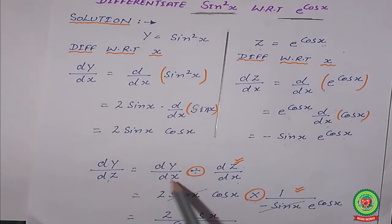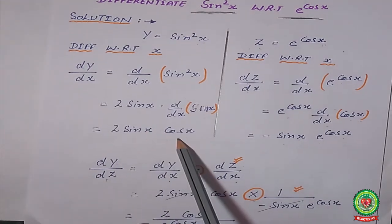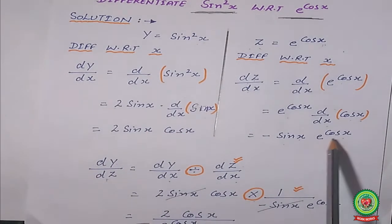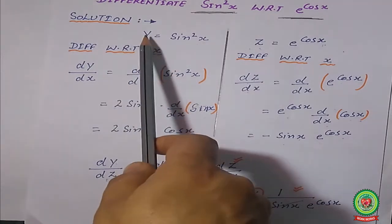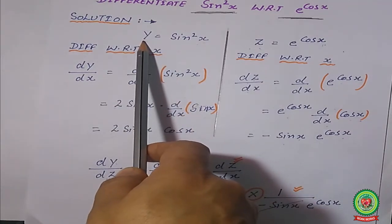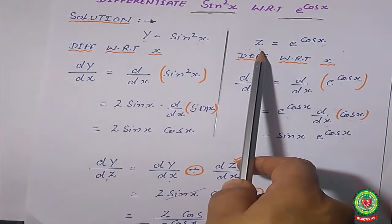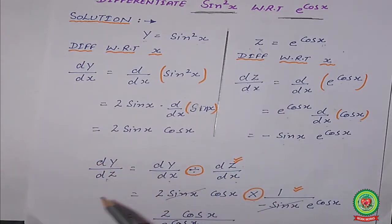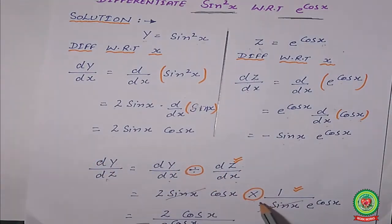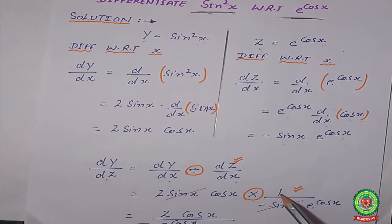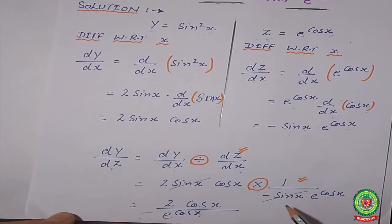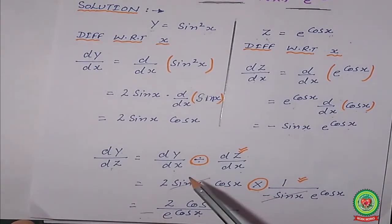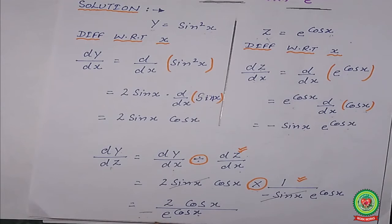In chain rule we multiply both differentiation results, but in derivative of a function with respect to another function, we divide them — the same approach as parametric equations. So dy/dz = (dy/dx) / (dz/dx) = 2sin(x)cos(x) / (−sin(x) · e^(cos x)). When we flip the denominator and multiply, and cancel sin(x), the final answer is −2cos(x) / e^(cos x).